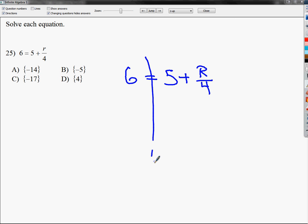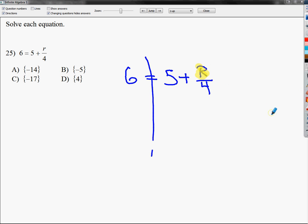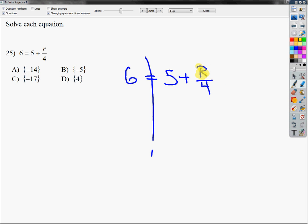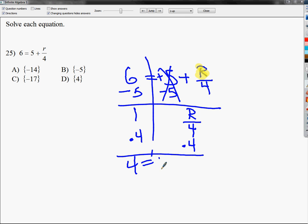First step is to draw my line. Then there is no distributive property here. So I can go ahead and get this R by itself. Since only the R is divided by 4, I still need to get rid of the number that's furthest away from it, which is plus 5. So I subtract 5 on both sides. 6 minus 5 is 1. Then I bring down this entire R divided by 4 term. Now in order to get R by itself, I need to get rid of divide by 4. And I'm going to use times 4. 1 times 4 is 4. So my final answer is R equals 4, which is D.